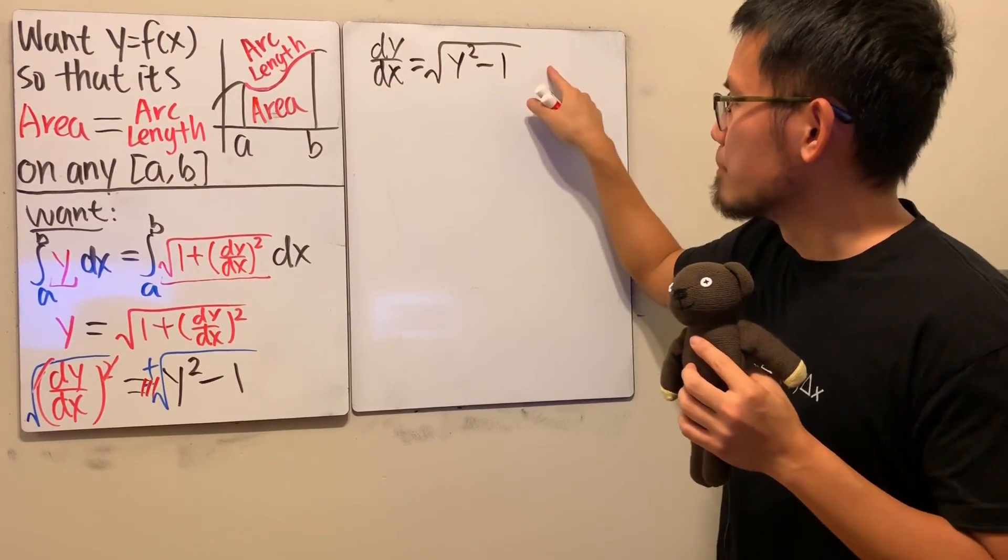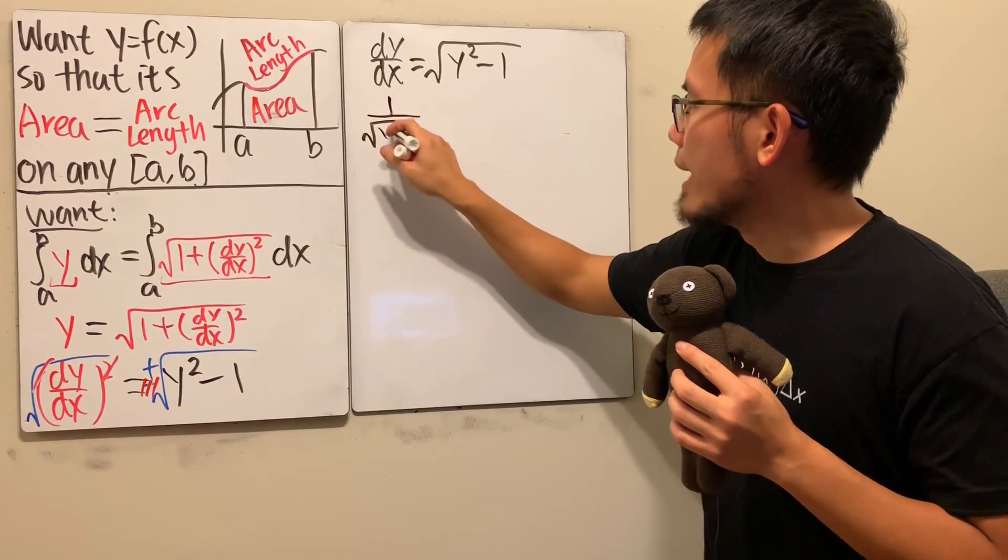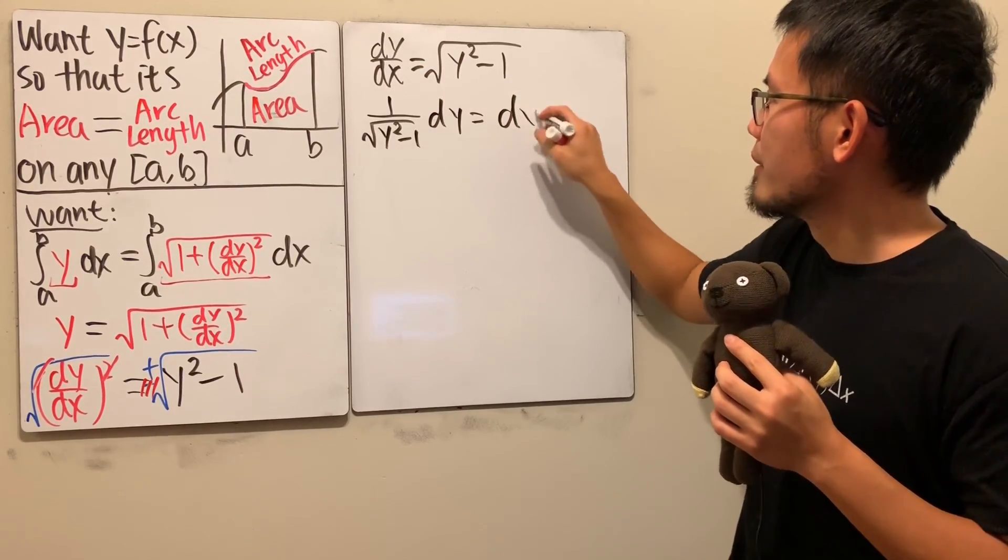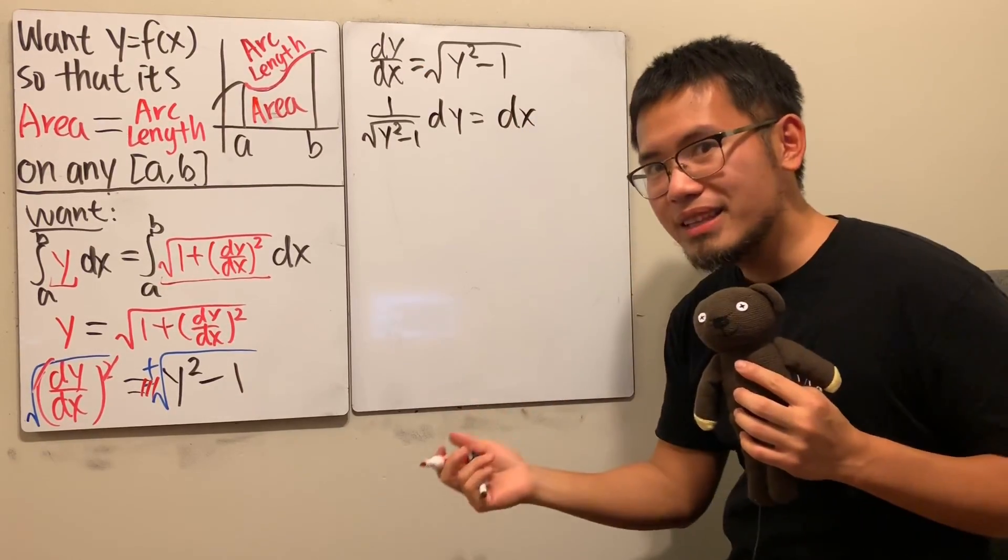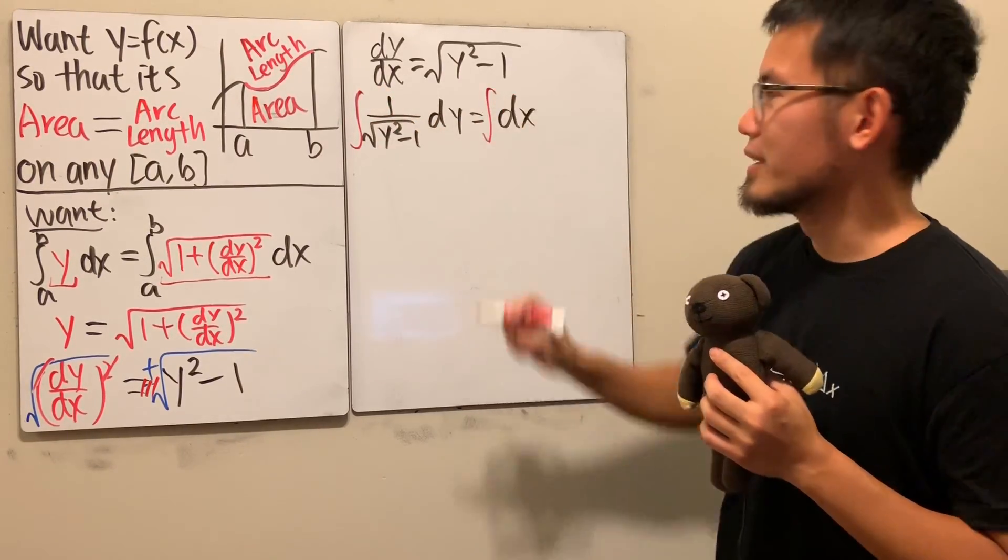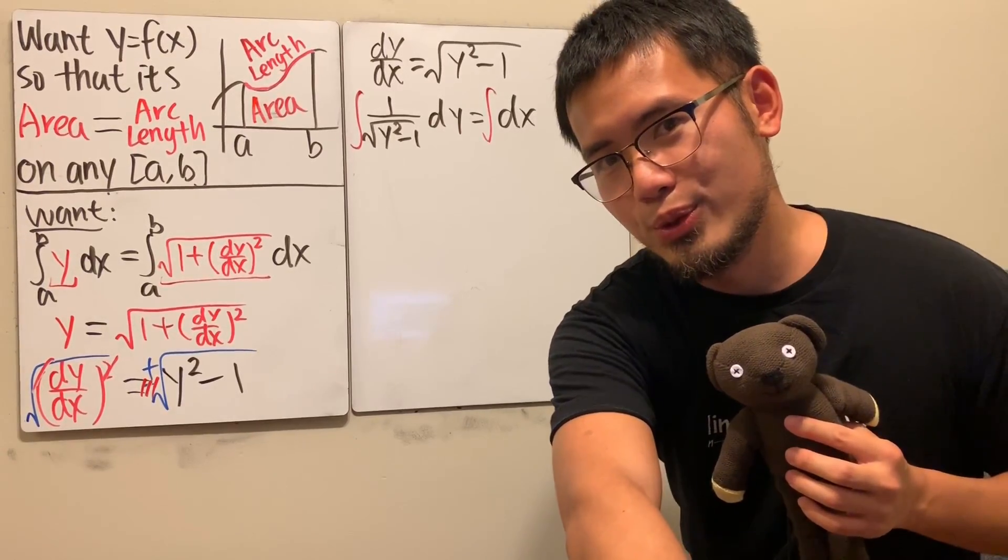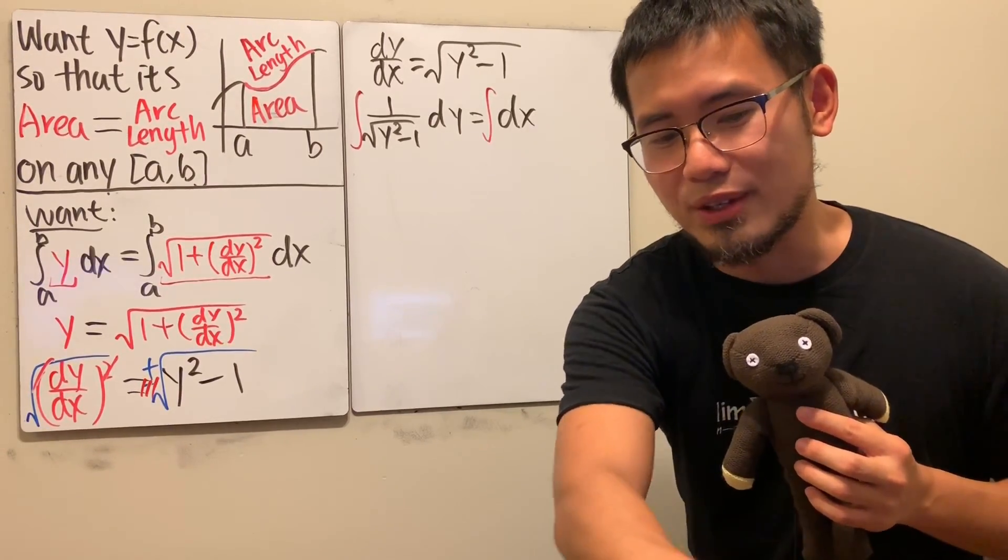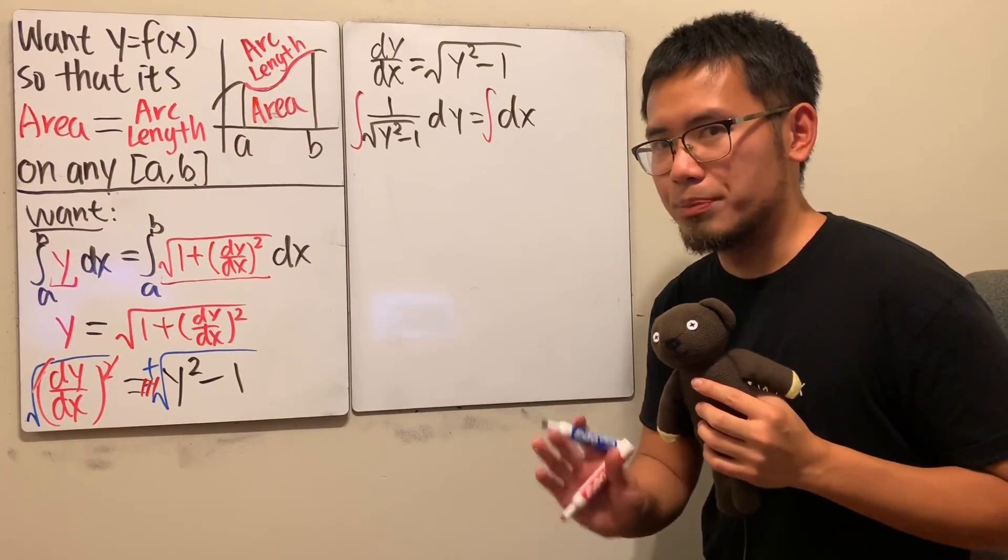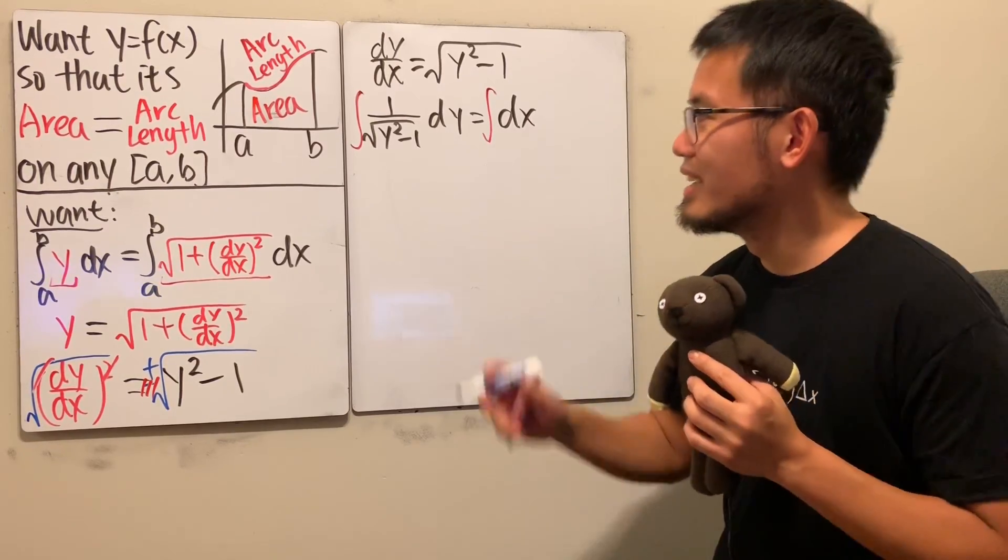Multiply the dx on both sides and divide this on both sides, it looks like we have the 1 over square root of y square minus 1 with the dy and this is equal to the dx right here. Then we can just integrate both sides, very nice huh, integrate integrate integrate. How would you integrate this though? Hmm yes you can do the u substitution with some trig functions, trig sub technically.